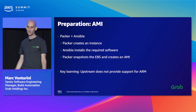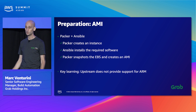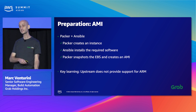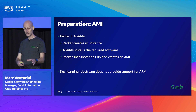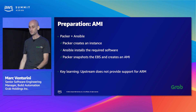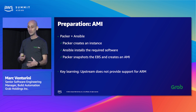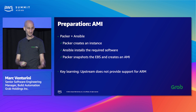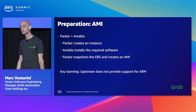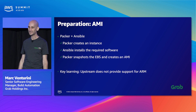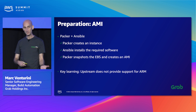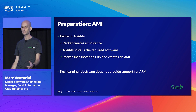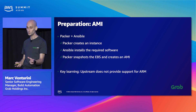For the AMI, we used Packer and Ansible. Packer creates an instance from an existing AMI, runs scripts — in our case Ansible — then terminates the instance, snapshots the EBS, and creates a new AMI. Packer is fairly easy to adapt from Intel or AMD to Graviton: you just change the instance type and starting AMI. That worked fairly smoothly, but we discovered one of our upstreams was a proprietary package that did not support ARM at the time. We didn't have the luxury to recompile it ourselves, so we had to check with the vendor to deliver ARM support — something we could have checked earlier.